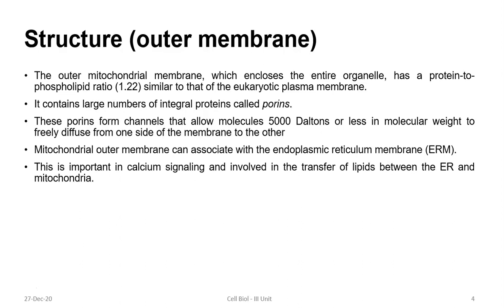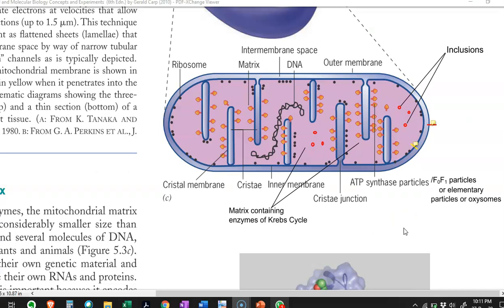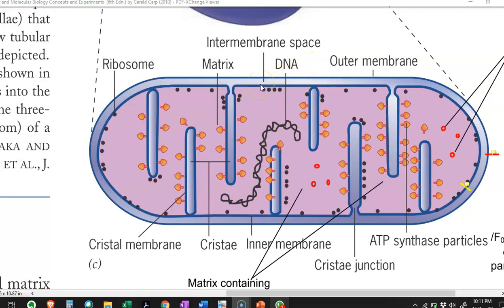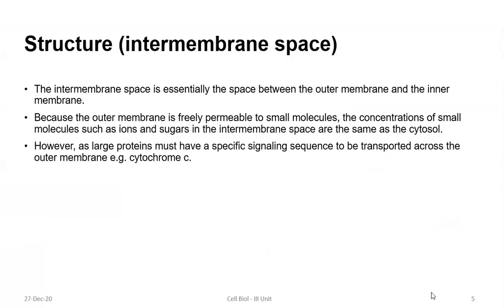The mitochondrial outer membrane can sometimes associate with the endoplasmic reticulum, which is important in calcium signaling and involved in the transfer of lipids between the endoplasmic reticulum and mitochondria. Inside the outer membrane is the intermembrane space — essentially the space between the outer and inner membranes. Since the outer membrane is freely permeable to small molecules, the concentration of small molecules such as ions and sugars in the intermembrane space is similar to that of the cytosol. However, large proteins must have a specific signaling sequence to be transported across the outer membrane into the inner regions.